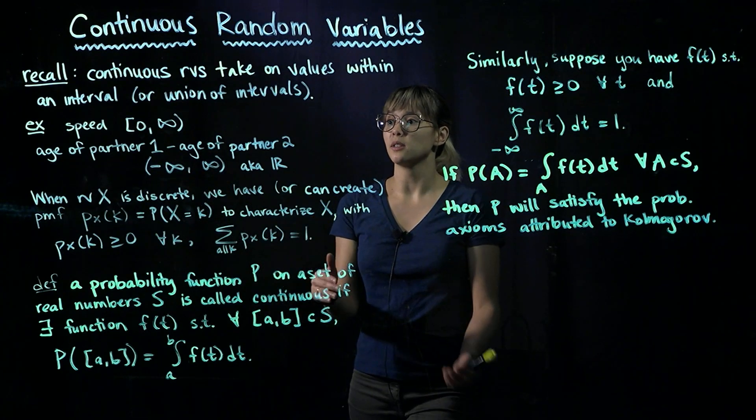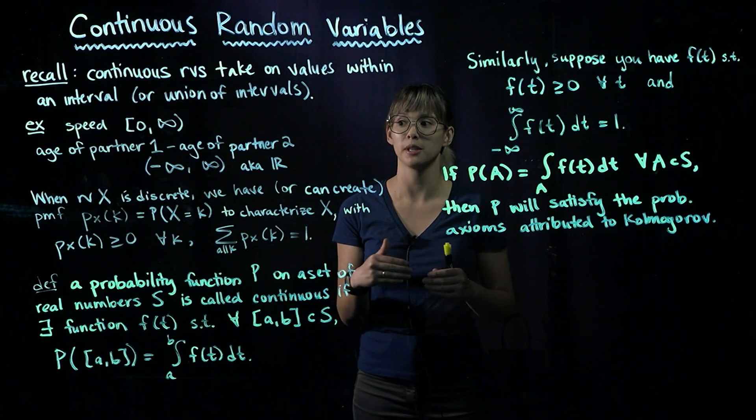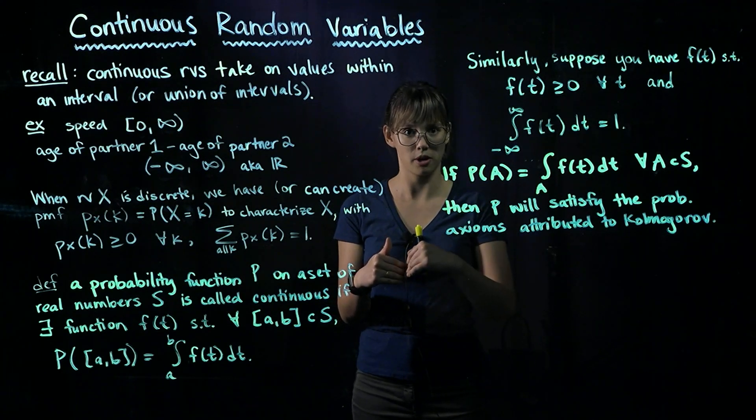That's because there's no limit to how much older partner one could be than partner two, and there's no limit to how much older partner two is compared to partner one.